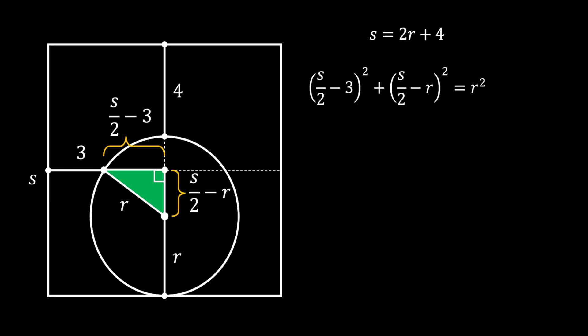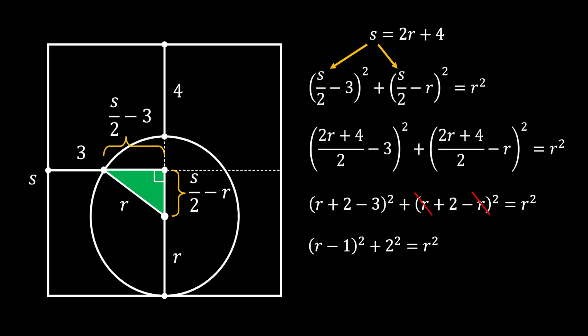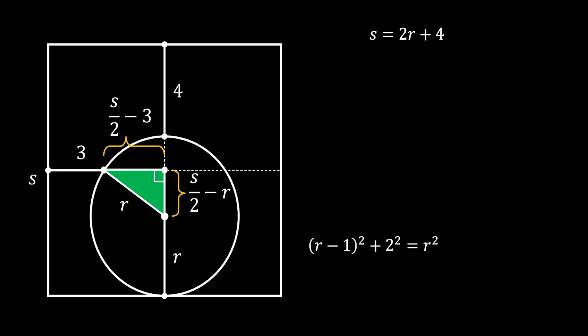Now we will substitute the value of S in both of our terms and we will get the following. We can now simplify the first term in both brackets by dividing it with 2 and we will get the following. Now we can simplify this further and we will get the following.